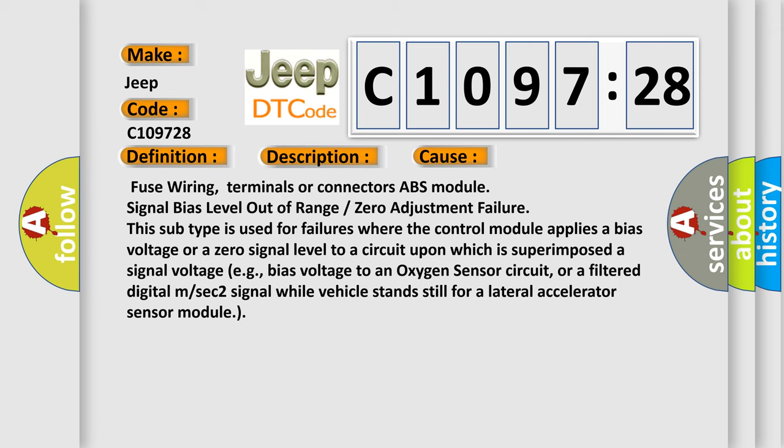This diagnostic error occurs most often in these cases: fuse wiring, terminals or connectors ABS module signal bias level out of range or zero adjustment failure. This subtype is used for failures where the control module applies a bias voltage or a zero signal level to a circuit upon which is superimposed a signal voltage, for example, bias voltage to an oxygen sensor circuit, or a filtered digital signal while vehicle stands still for a lateral accelerator sensor module.